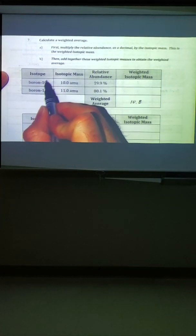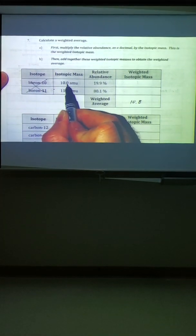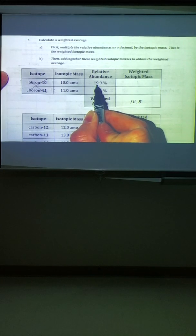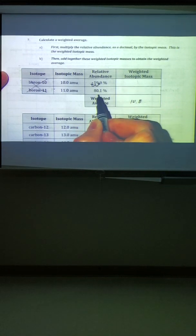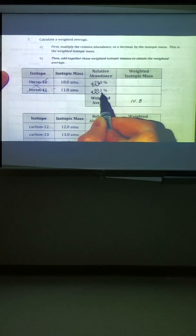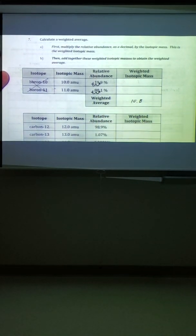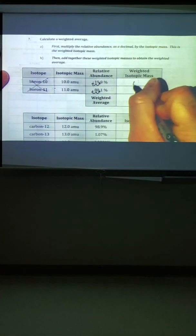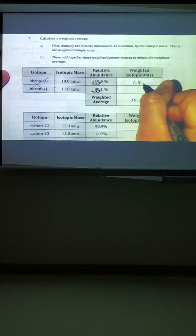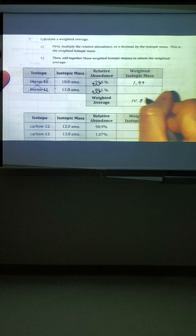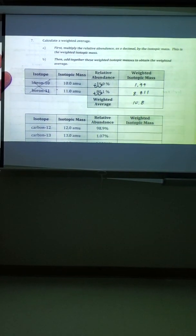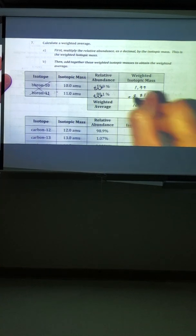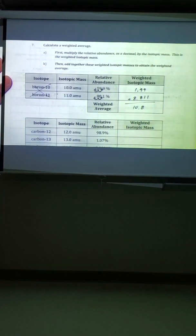So these are just the names, don't worry about those. Here's the mass, here's the percentage. When you multiply by a percentage, you have to convert it to a decimal. You have to convert it to a decimal. When you do this in your calculator, you'll get 1.99 and you'll get about 8.811. And this will be added together to give you the answer we have in the periodic table.